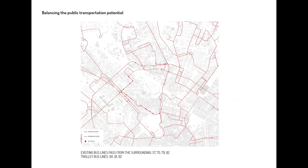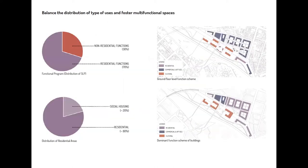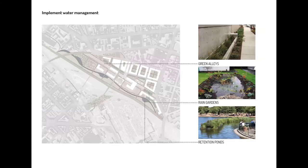Next is balancing the public transportation potential. I propose to extend the existing bus route following the north boundary of the area. These graphs show the distribution of functions: I propose 30% non-residential and 70% residential functions. Approximately 20% of the residential is dedicated to social housing. About water management, I mainly propose to drain excess stormwater by nature-based solutions — green alleys to make parameters of growth permeable, rain gardens especially close to buildings, and retention ponds to store water with the help of native vegetation in the wet zone.